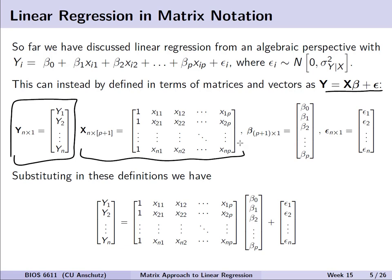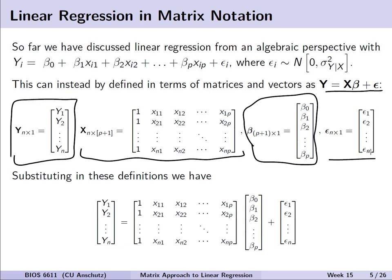Instead of the algebraic perspective, it can be more efficient to use matrices and vectors. We can write the equation as boldface capital Y for the column vector of outcomes, boldface X for the design matrix, beta, and epsilon. The column vector for Y contains each observation's outcome from 1 through n, and the design matrix has a row for each observation and columns for the intercept and each predictor — that's why we have p plus 1 columns.